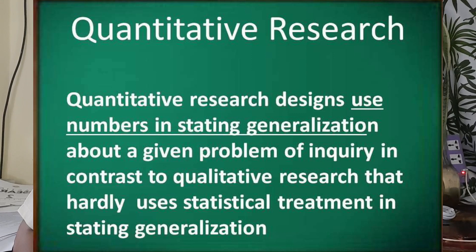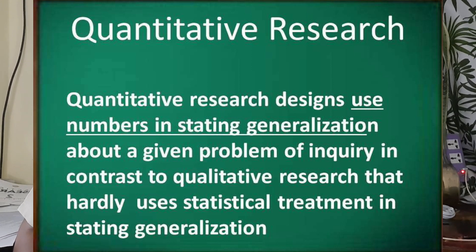Quantitative research designs use numbers in stating generalizations about a given problem of inquiry, in contrast to qualitative research that hardly uses statistical treatment in stating generalizations. Qualitative research is more on participants' experiences, opinions, and perspectives. Quantitative research, however, is more on statistical treatment and numbers. It is a systematic investigation of quantifiable data, performing statistical treatment, reaching existing and potential respondents using sampling methods, online surveys, online polls, questionnaires, etc.